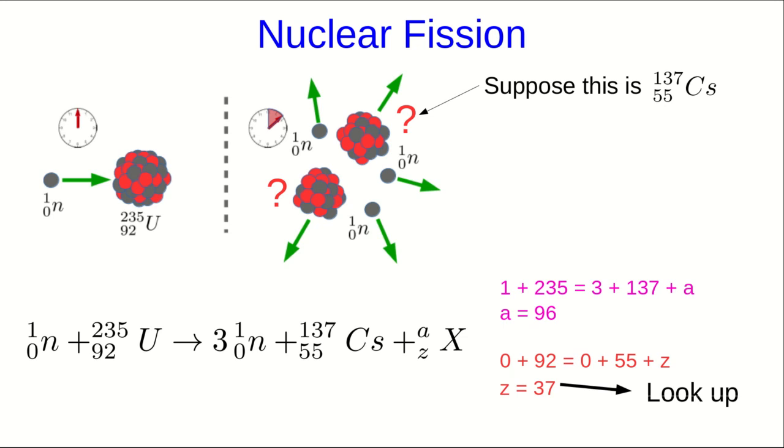And you can look that up, for example, just by looking at a periodic table of the elements, and see that element number 37 is rubidium. So the unknown fission product here must be rubidium-96.